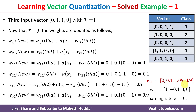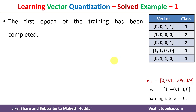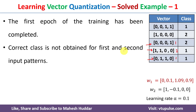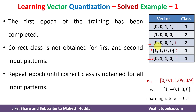This completes the first epoch. In this epoch, the first and second input vectors were misclassified — the first was classified as class 1 (target 2) and the second as class 2 (target 1) — while the third was correctly classified as class 1. We need to repeat the epochs until all input vectors are classified correctly. Once all vectors are correctly classified, the resulting weights will be the final trained weights of the LVQ network.